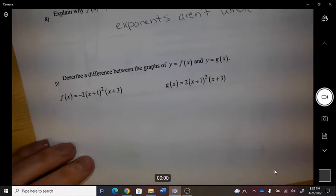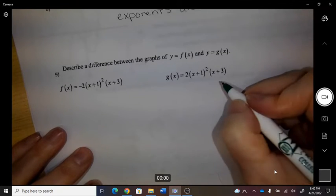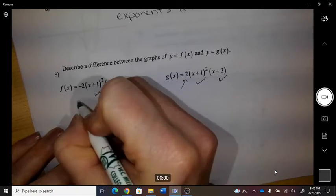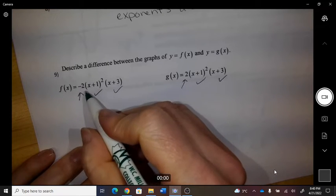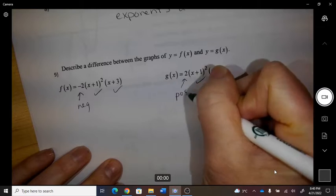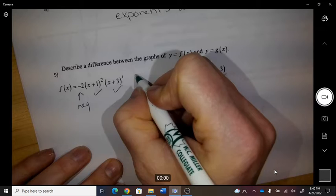Number nine: describe a difference between these two graphs. So this is the same, this is the same. So this one is a negative coefficient and this one is a positive coefficient. So squared and one make a cubic.